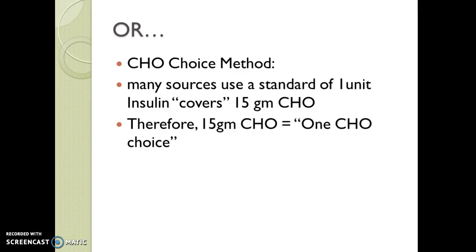Another way to do the carbohydrate calculation is to use a standard of one unit of insulin covering 15 grams of carb. Therefore, 15 grams of carb becomes one carb choice — you'll see this a lot in diabetic teaching literature. This is fine for people in the median weight range, but we have to recognize that very heavy patients will need more insulin because their unit of insulin may only cover 10 or even 5 grams of carb. Adipose tissue has intrinsic insulin resistance. On the low end, a 90-pounder will need much lighter mealtime coverage, even with the same number of carbs.